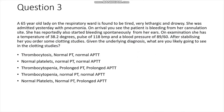Next question: a 65-year-old lady admitted to the respiratory ward, found to be tired, lethargic, and drowsy, admitted yesterday with pneumonia. On arrival she is bleeding from her cannulation site and has reportedly started bleeding spontaneously from her ears. On examination she has a temperature of 38.2 degrees, a pulse of 118 beats per minute, and a blood pressure of 89 over 60. After stabilising the patient you order some clotting studies. Given her underlying diagnosis, what are you likely to see? The answer is thrombocytopenia, prolonged PT, and prolonged APTT.